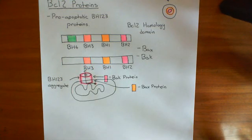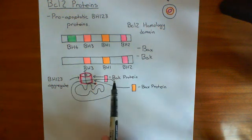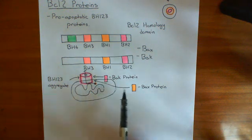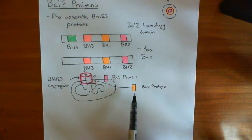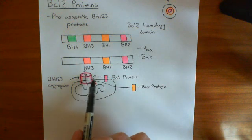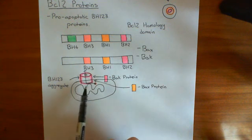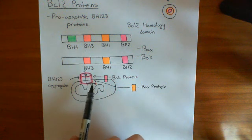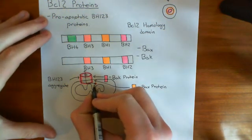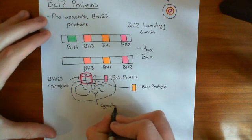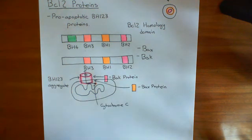Welcome to this next video on the intrinsic pathway of apoptosis. So far what we've seen is that we have these proapoptotic BH123 proteins in the outer membrane of the mitochondria and in the cytoplasm. Both of these are trying to form proapoptotic BH123 aggregates which will form a channel in the outer membrane of the mitochondrion, allowing cytochrome C to leave the intermembrane space and move into the cytoplasm of the cell, triggering apoptosis.